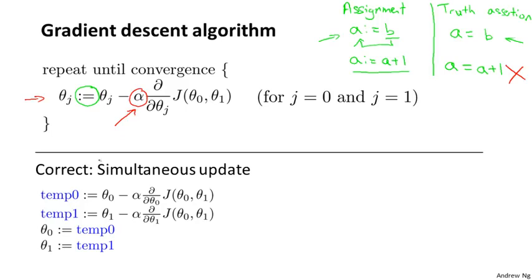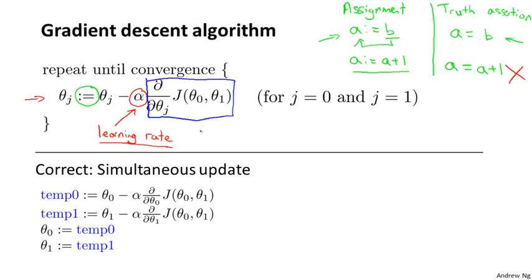This alpha here is a number called the learning rate. What alpha does is it basically controls how big a step we take downhill with gradient descent. If alpha is very large, that corresponds to a very aggressive gradient descent procedure where we're trying to take huge steps downhill. If alpha is very small, then we're taking little baby steps downhill. I'll come back and say more about how to set alpha later. And finally, this term here is a derivative term. I'll derive this derivative term and tell you exactly what it is later. Even if you aren't familiar with calculus, don't worry about it — I'll tell you what you need to know about this term.